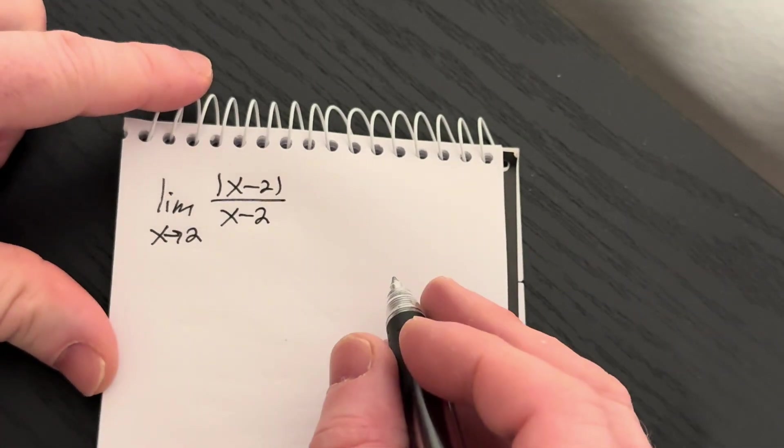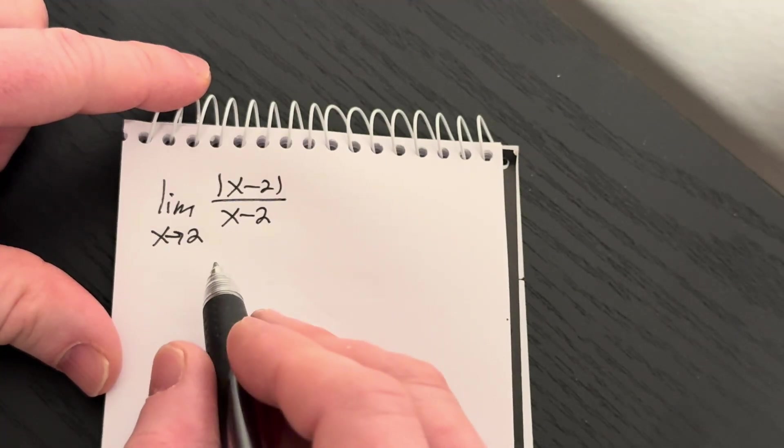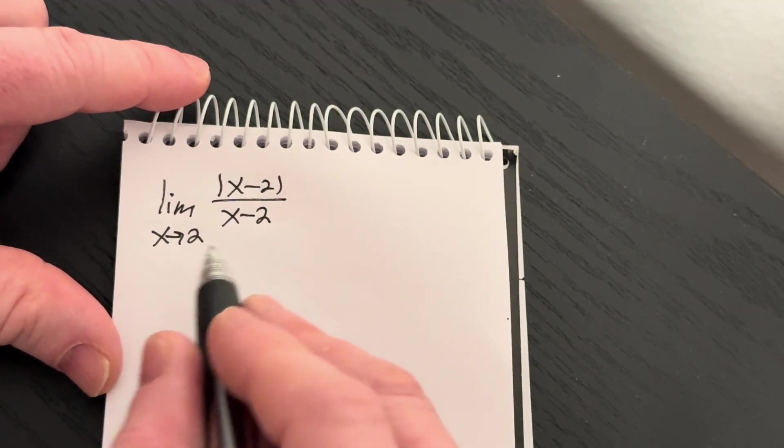Hi, in this video we're going to work out this limit. We have the limit of the absolute value of x minus 2 over x minus 2, and we're going to approach 2.